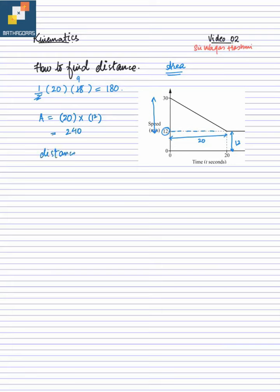If I need to find the distance covered in the first 20 seconds, I need to add these two: 180 plus 240, and that gives you the value of 420 meters. That means the total distance covered in the first 20 seconds is 420 meters. That's how you find the distance in your speed-time graph by using area under the curve.